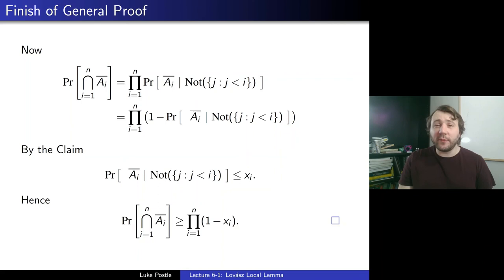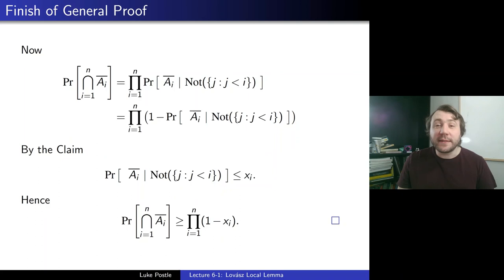So that concludes our proof of the local lemma. We've done the statements and the proof. Next time we'll look at applying the local lemma. The Lovász Local Lemma is one of the foundations of probabilistic combinatorics — it's very useful with many applications. Today we went through the statement, gave some intuition, and then went through a formal proof. Until next time, see you then!